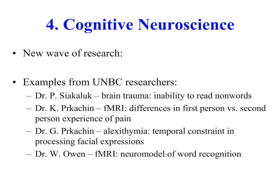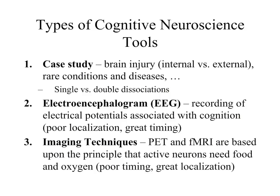Let's explore cognitive neuroscience. In essence, cognitive neuroscience is a new wave of research. Here are some examples from the University of Northern British Columbia: Dr. Paul Syaklak has examined brain trauma and the inability to read non-words; Dr. Ken Perkishan has used fMRI to study differences in first-person versus second-person experience of pain; Dr. Glenda Perkishan has examined alexithymia, temporal constraints, and processing facial expressions; and I've used fMRI to neuromodel word recognition. Cognitive researchers can use a whole range of cognitive neuroscientific tools when examining cognition.